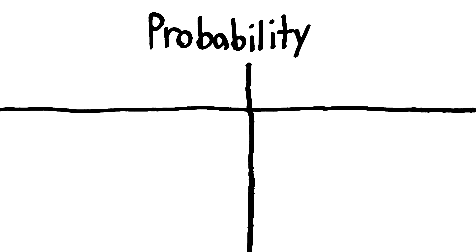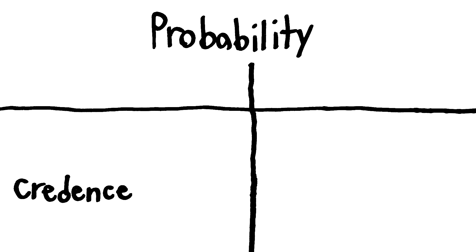When we talk about probability or chance, there are basically two things we can mean. First, we might be making a claim about our own credence.